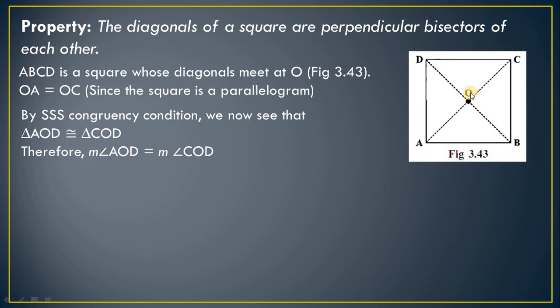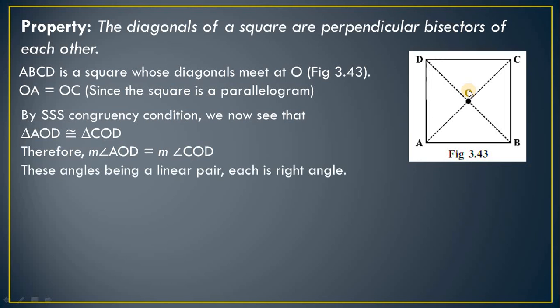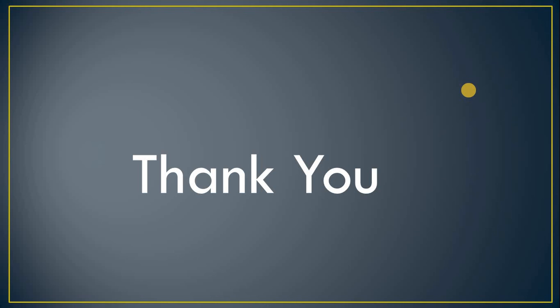Since angles AOD and COD are equal and they form a straight line, each equals 90 degrees — they are right angles. This proves the diagonals of a square are perpendicular bisectors of each other. I hope you understood this presentation, and in the next class we will move on to the exercise corner.